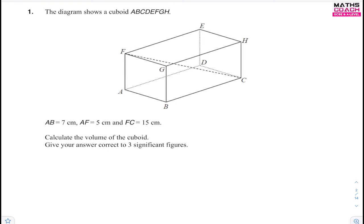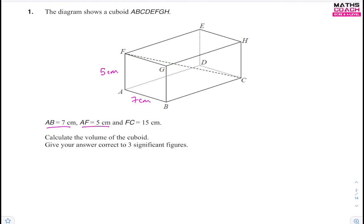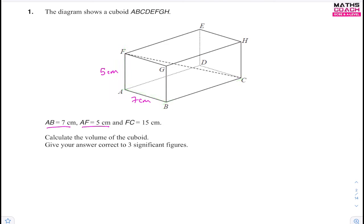Looking at this question, we can fill in some details. We've been told that A to B is 7 centimetres, A to F is 5 centimetres, and FC is 15 centimetres — that's this diagonal length. Using this diagonal length, we can create another triangle. The volume of a cuboid is this length times this height times this length, but we don't have this third length, so that's our unknown.